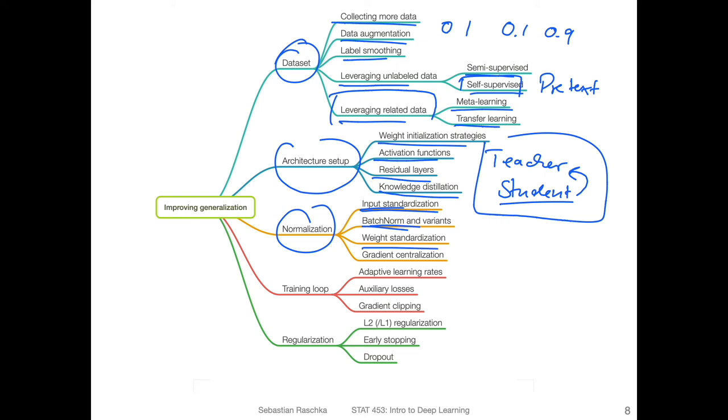Weight standardization, there are also techniques for standardizing weights. It's kind of related to the weight initialization topic, but there are also additional topics for that, and also gradient centralization. Gradient centralization is similar to input standardization, except that you normalize the gradients so that they have zero mean and unit variance.